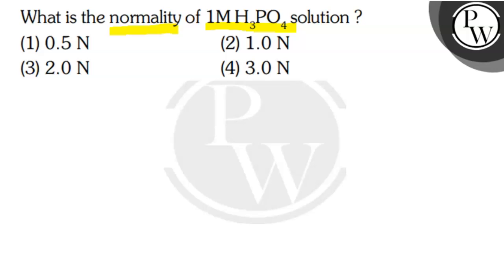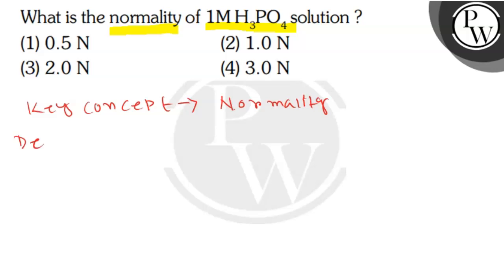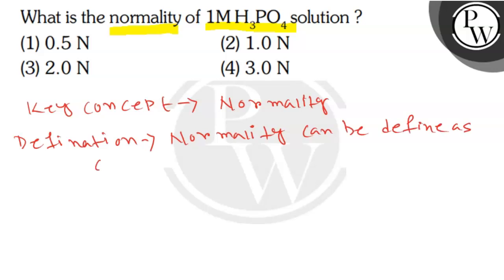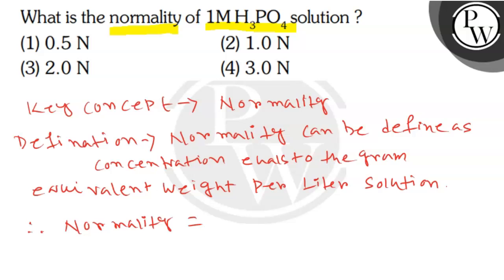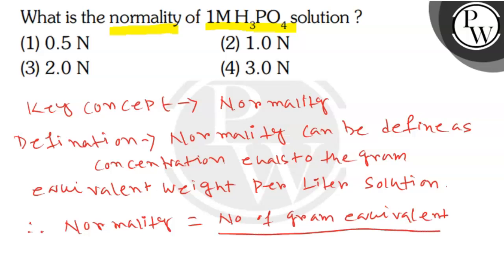What is the key concept here? The key concept here is normality. Normality can be defined as concentration equals gram equivalent weight per liter of solution. Therefore, normality is equal to the number of gram equivalents divided by one liter of solution.